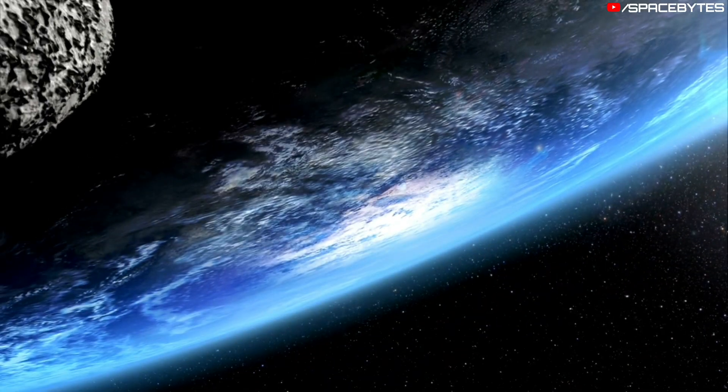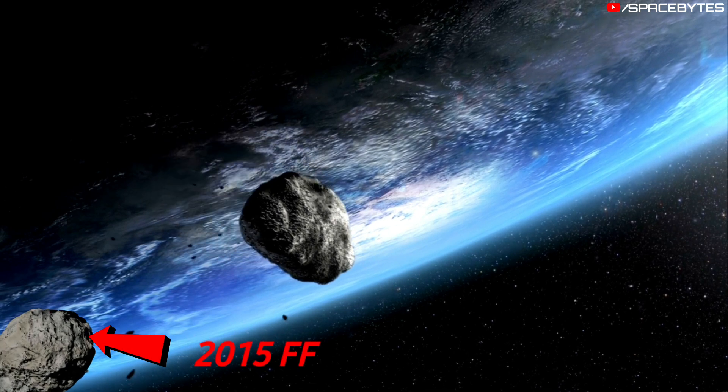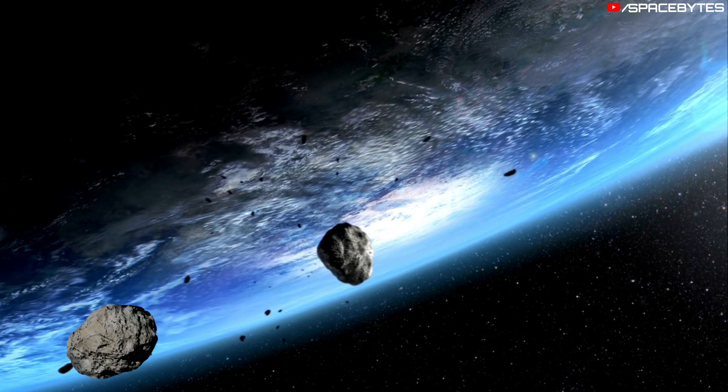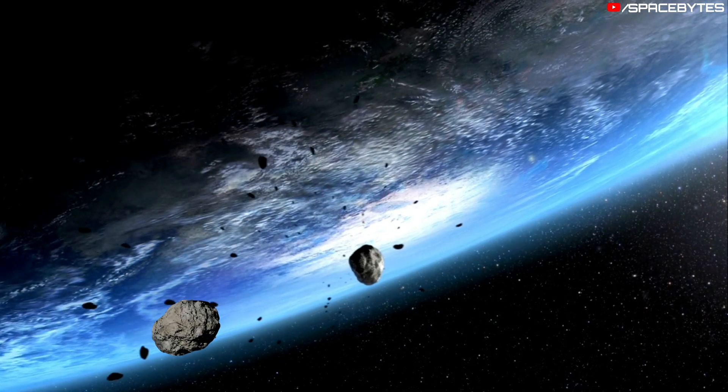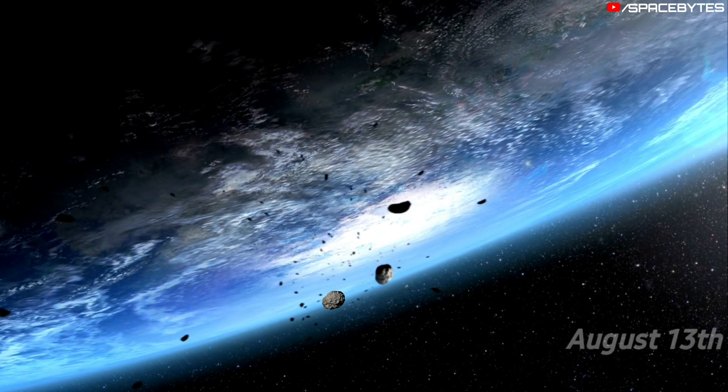According to NASA, two massive asteroids 2022 OT1 and 2015 FF are moving towards Earth at very high speed and are expected to make their closest approach to the planet on August 12 and August 13.